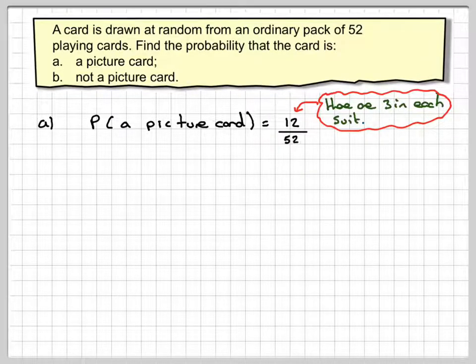And there are 52 cards in a set of playing cards already. So 12 out of 52 counts down to 3 out of 13.